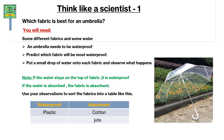Think like a scientist: which fabric is best for an umbrella? You will need some different fabrics and some water. An umbrella needs to be waterproof. Predict which fabric will be most waterproof. Put a small drop of water on each fabric and observe what happens.